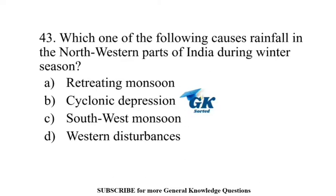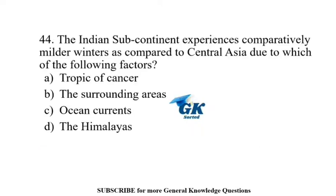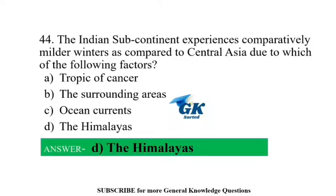Which one of the following causes rainfall in the north-western parts of India during winter season? Western disturbances. The Indian subcontinent experiences comparatively milder winters than Central Asia due to the Himalayas.